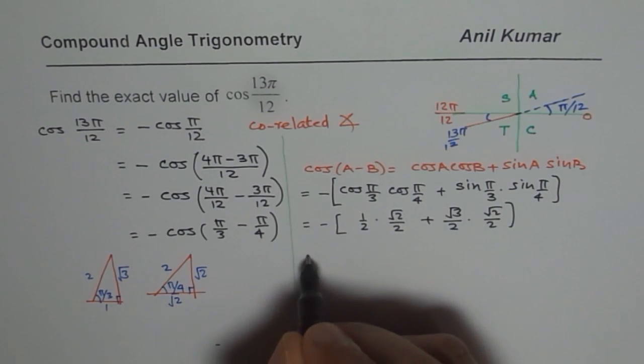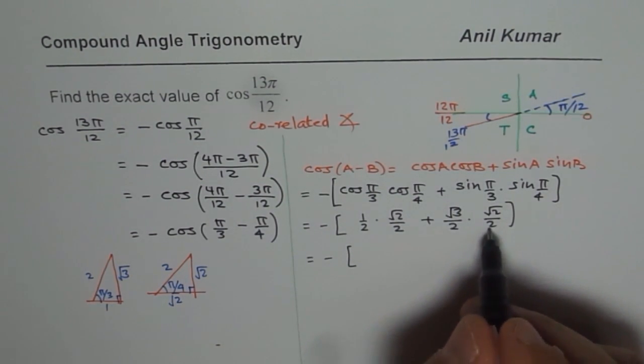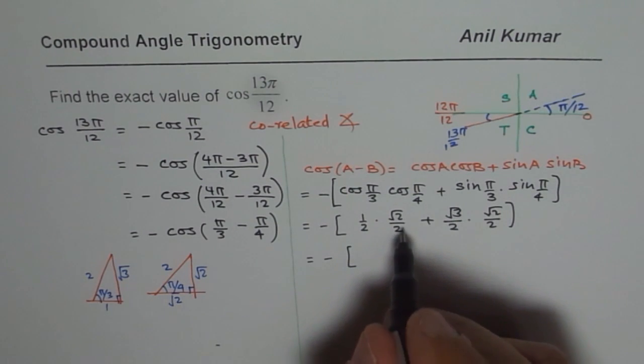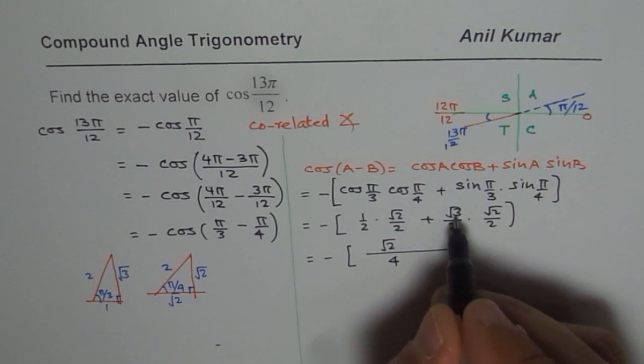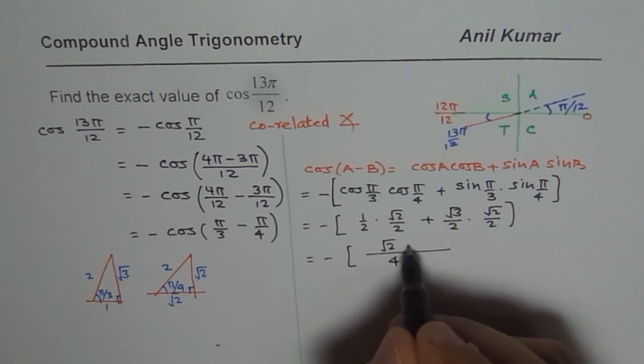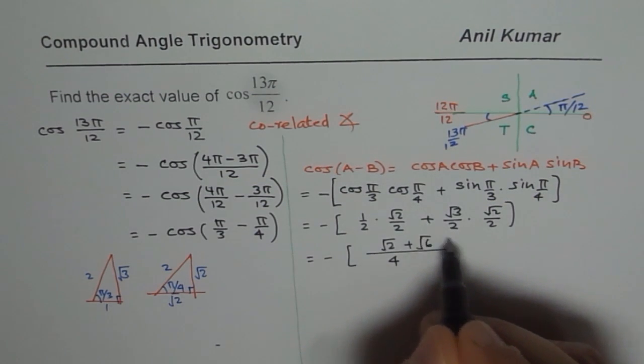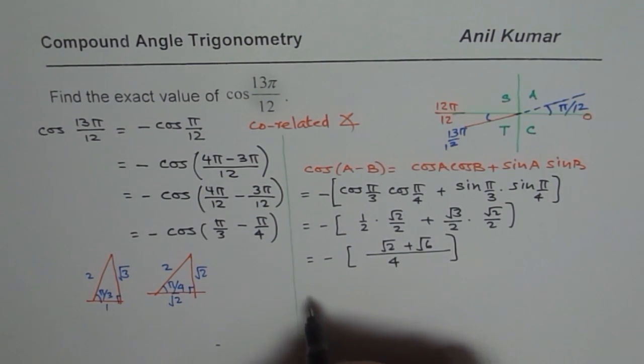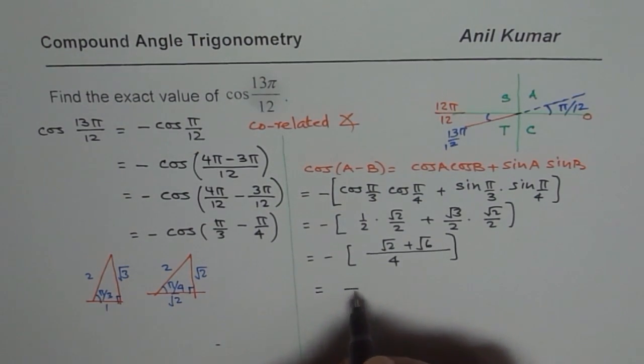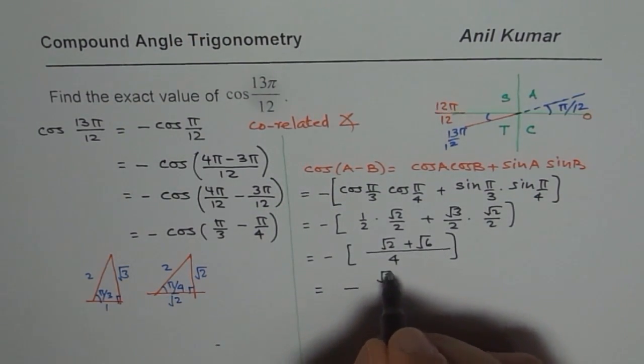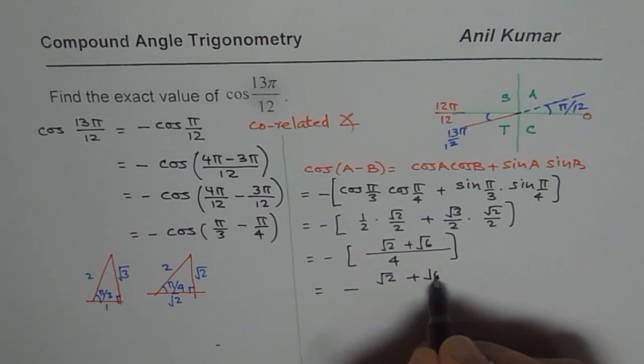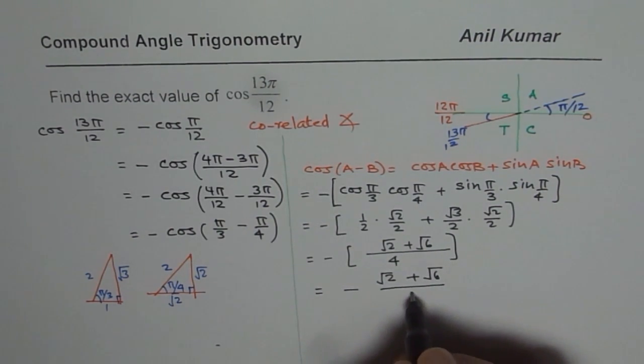Now, let us combine these. Common denominator is 4 for us. This is 4 and the numerator will be, so we will take common denominator of 4 and here we have √2 and 3 times 2 is 6 plus √6. Is it okay? And minus is outside, so we will write this as minus √2 plus √6 over 4.